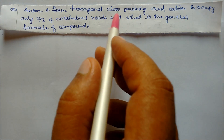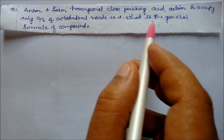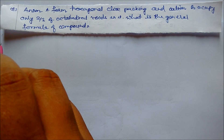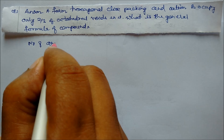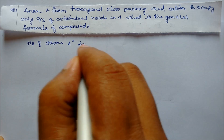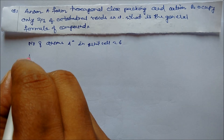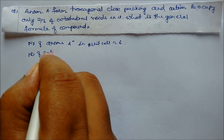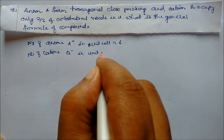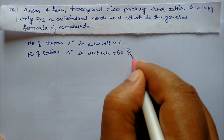Next: Anions A form hexagonal close packing and cations B occupy only two-thirds of the octahedral voids. What is the general formula of the compound? The number of anions A in the unit cell is 6. The number of cations B in the unit cell = 6 × 2/3 = 4.